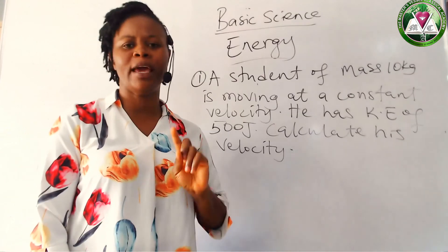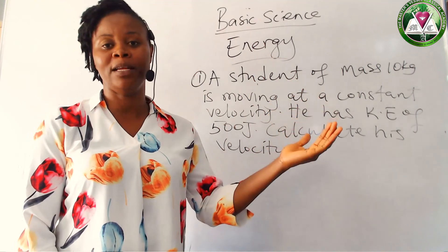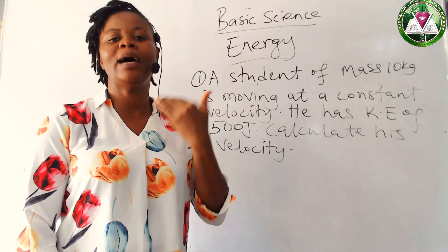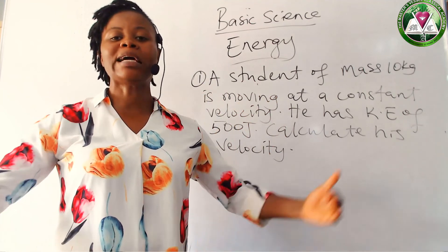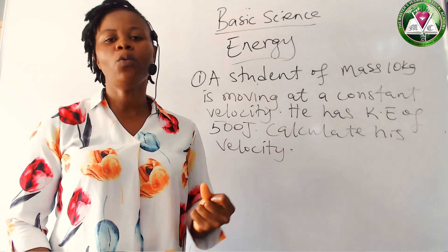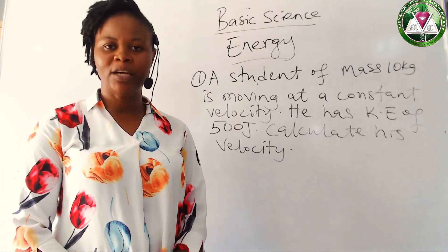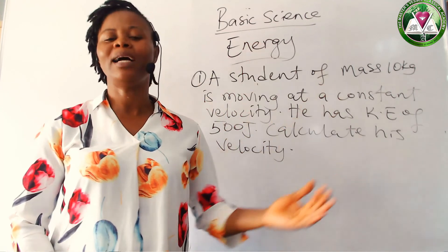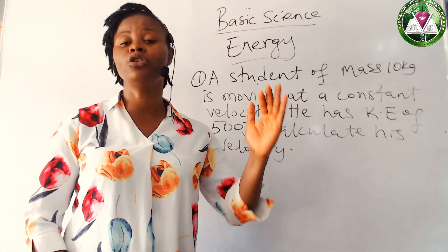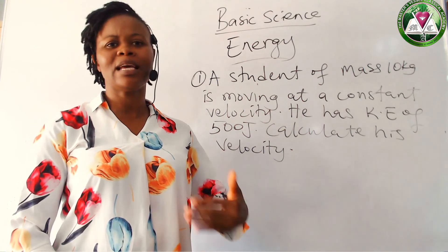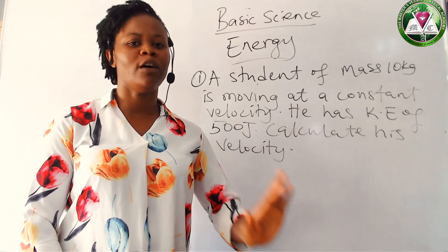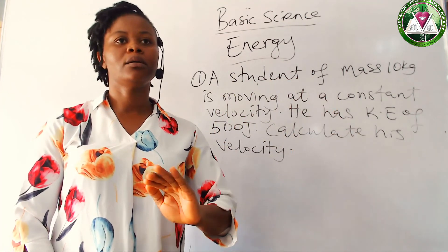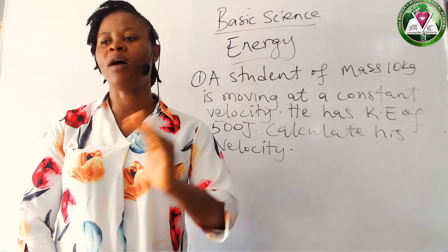Let me run down what we did. Energy is the ability or the capacity to do work. A child running through a staircase has something that enables him to do that, and that is energy. Someone with greater energy does greater work. We also mentioned various forms of energy and said there are appliances that help convert energy from one form to another. That is what we refer to as the law of conservation of energy — energy can be converted from one form to another. It cannot be destroyed, it cannot be created, but it can change from one form to another.